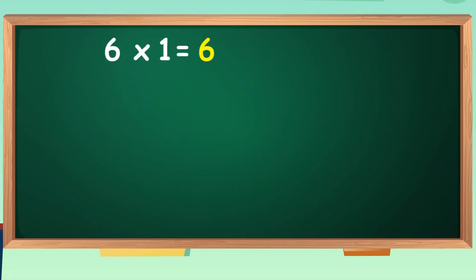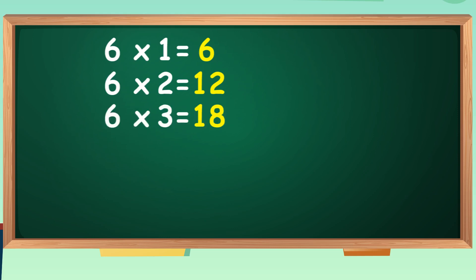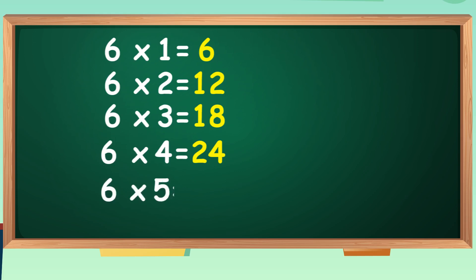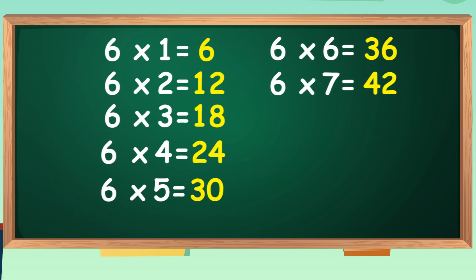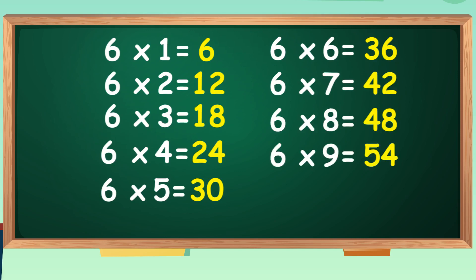Six ones are six. Six ones are six. Six twos are twelve. Six twos are twelve. Six threes are eighteen. Six threes are eighteen. Six fours are twenty-four. Six fours are twenty-four. Six fives are thirty. Six fives are thirty. Six sixes are thirty-six. Six sixes are thirty-six. Six sevens are forty-two. Six sevens are forty-two. Six eights are forty-eight. Six eights are forty-eight. Six nines are fifty-four. Six tens are sixty. Six tens are sixty.